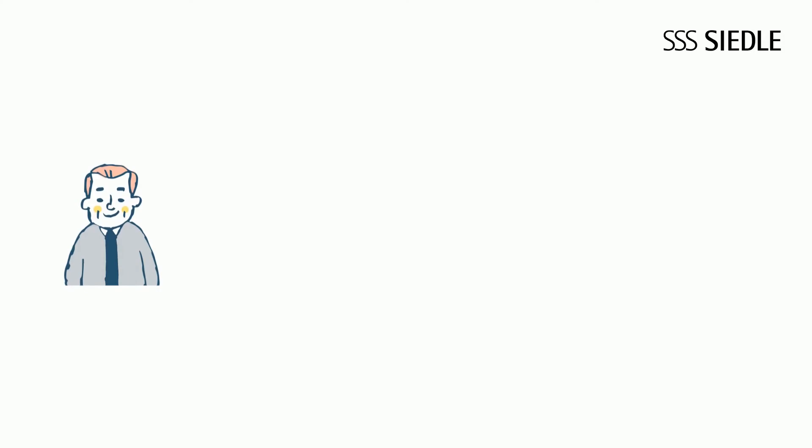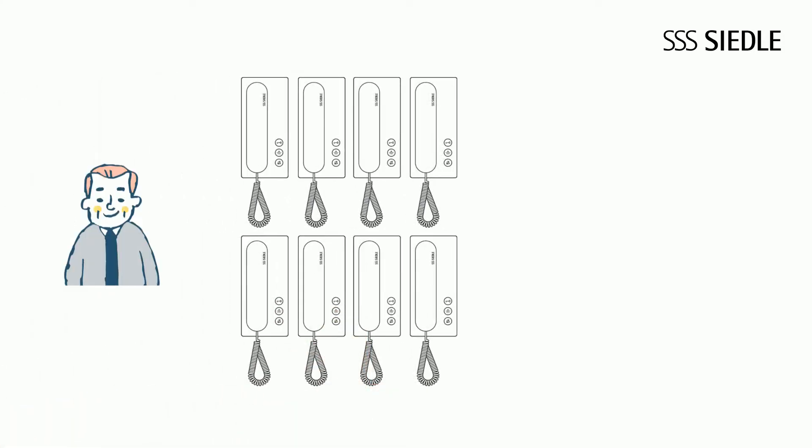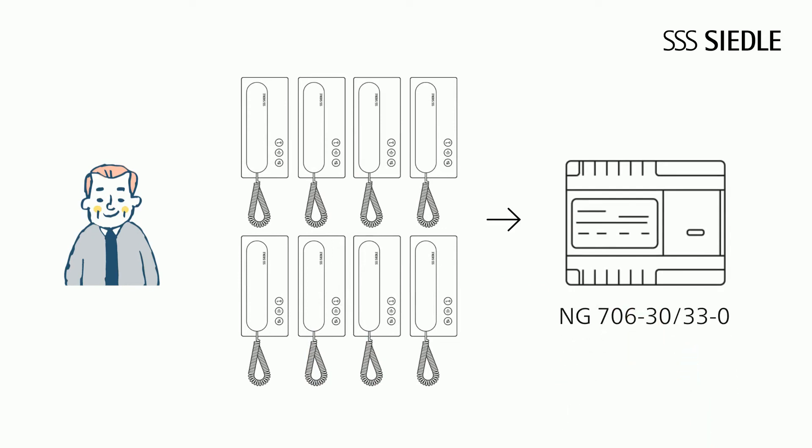Mr. Smith is planning a new office building on the outskirts of the city. All eight IQ in-house telephones are easily powered by a single NG706 network device. It is simply snapped onto a DIN rail in the central control cabinet and the connections are wired.